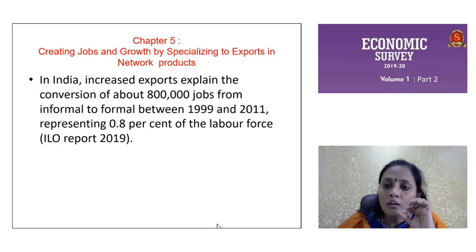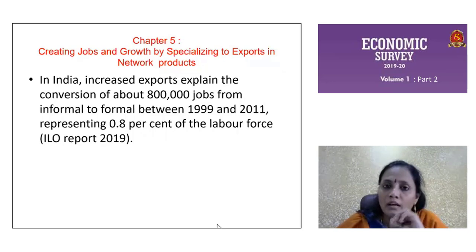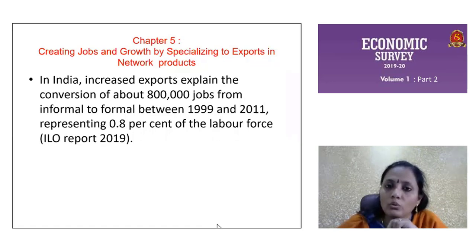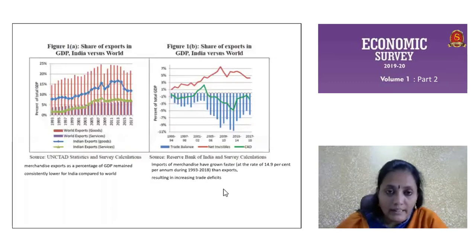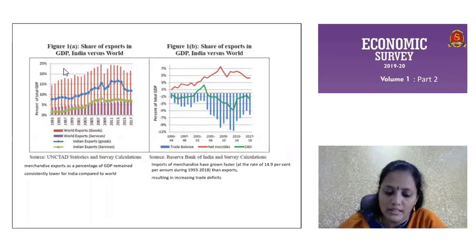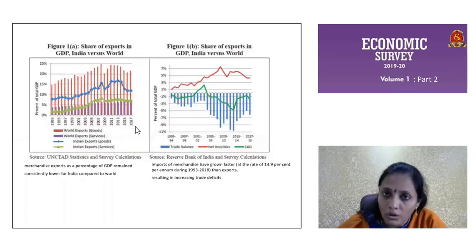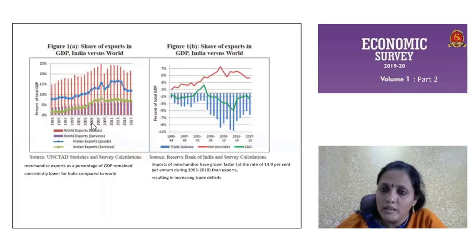Now we will go into the chapter and see how exports in different sectors are performing, how they can be improved, and what needs to be done for us to become part of the global value chain — they use the word GVC. This graph tells us that the share of exports in GDP for India, compared with the rest of the world, is something very less.